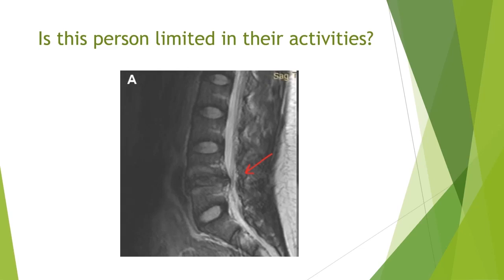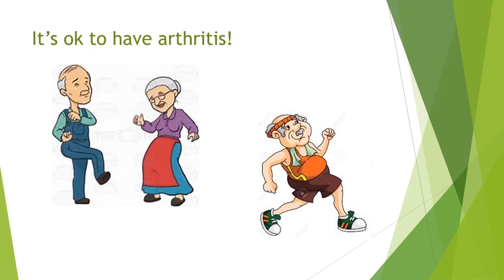A lot of us have imaging changes and don't even know it because they don't cause problems. On the other hand, we can have someone who has a lot of pain but their imaging is relatively normal. This is why it's really important to correlate any imaging with a clinical examination. Imaging just gives us a static picture — it doesn't tell us anything about movement. Some of us have joints that are stiff or joints that move too much, and these don't always show up on imaging.